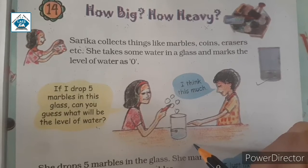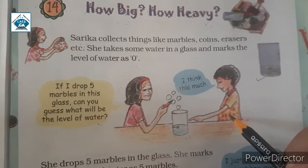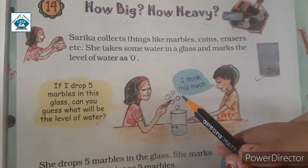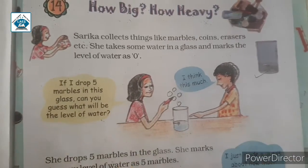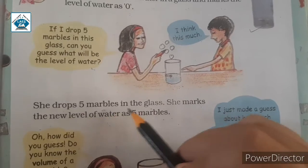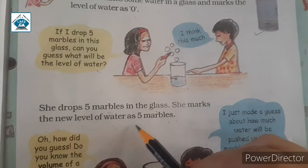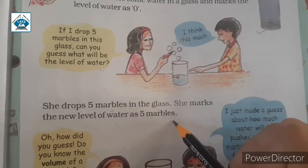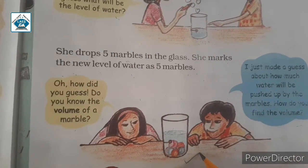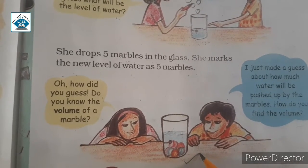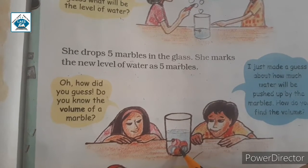Definitely the water will rise. The boy is saying that he thinks the water will rise to this level, and he is pointing at the glass. Now she drops 5 marbles in the glass and marks the new level of water as 5 marbles. The boy was right — that was the level of the water after putting 5 marbles.